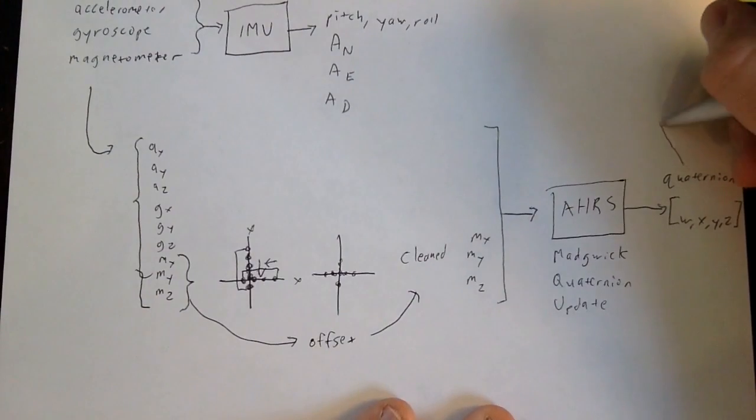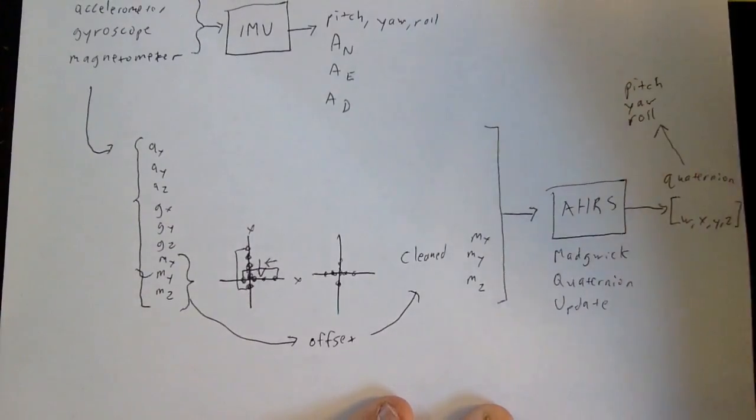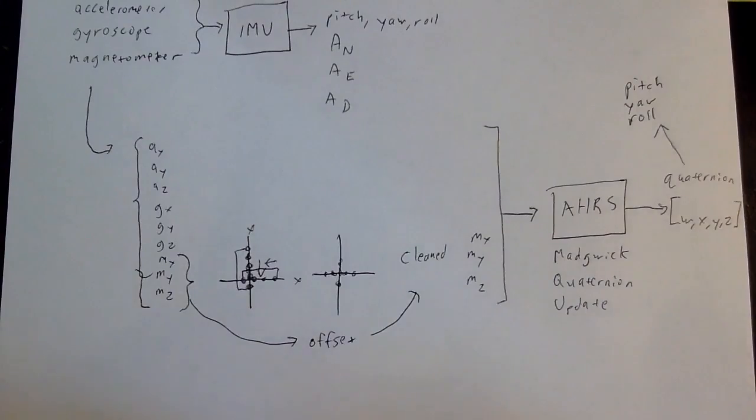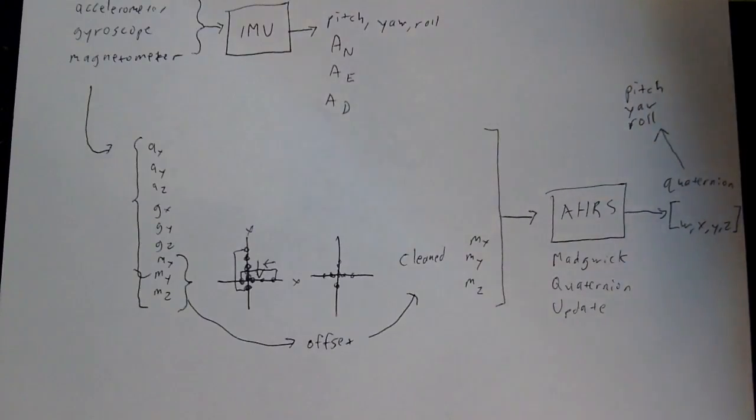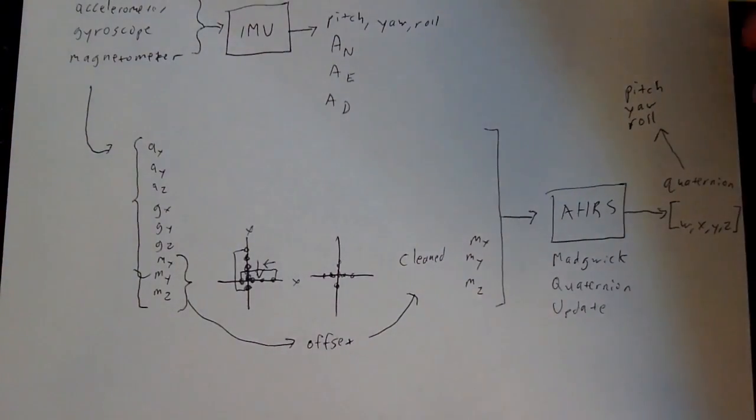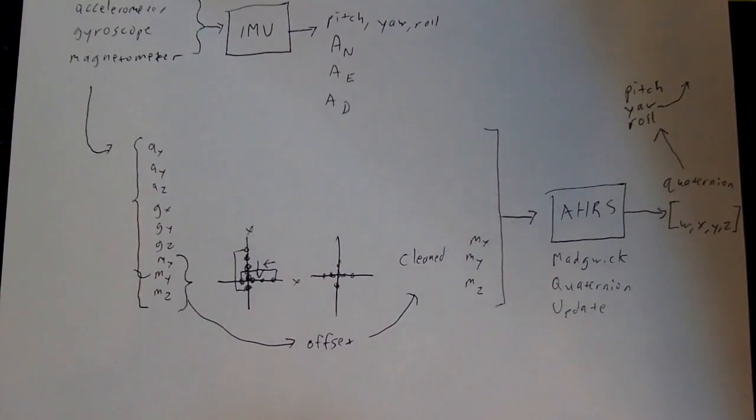And so once you have a quaternion, from here you can get your pitch, yaw, and roll values. And you can almost stop there. But again, how to get pitch, yaw, and roll from here is just really an implementation detail. All you need to do is just do a little bit of Googling. It's also important to note that if you were to stop here, you essentially need to account for magnetic declination offset here.